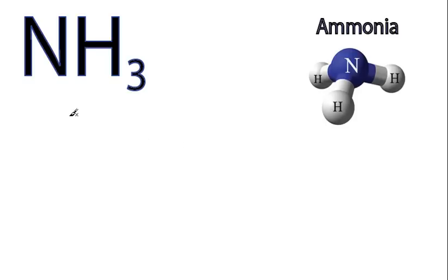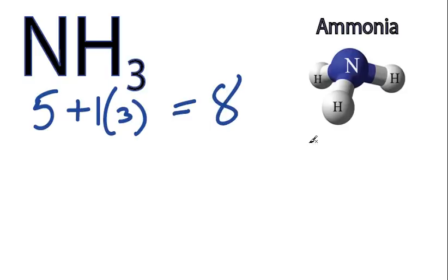On the periodic table, nitrogen is in group 5, or 15, so it has 5 valence electrons. And then hydrogen is in group 1. It has 1 valence electron, but we have 3 hydrogens, so let's multiply that by 3. 5 plus 3, total of 8 valence electrons.